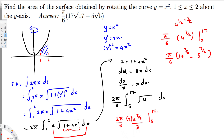And 3/2 is the same as 1.5, so 17 to the 3/2 is the same as 17 times the square root of 17, which we can write as 17√17. Similarly, 5 to the 3/2 is 5√5. So the final answer is 5π over 6 times (17√17 minus 5√5). I hope you guys find this video helpful — see you next time!